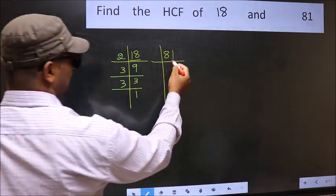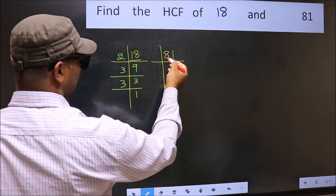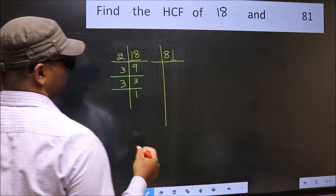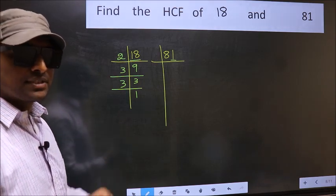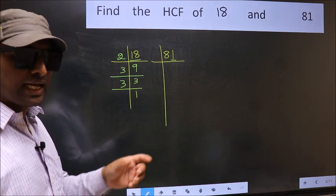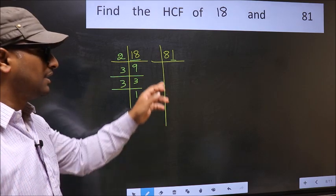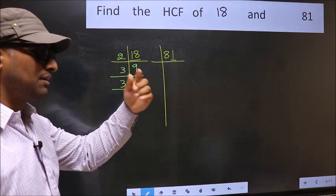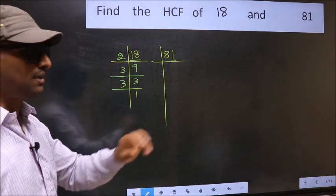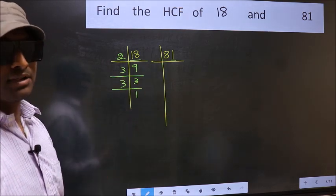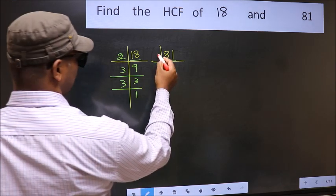Now the other number. Last digit is 1, not even, so not divisible by 2. Next prime number is 3. To check divisibility by 3, add the digits. 8 plus 1 we get 9, and 9 is divisible by 3. So this number is also divisible by 3. So take 3.